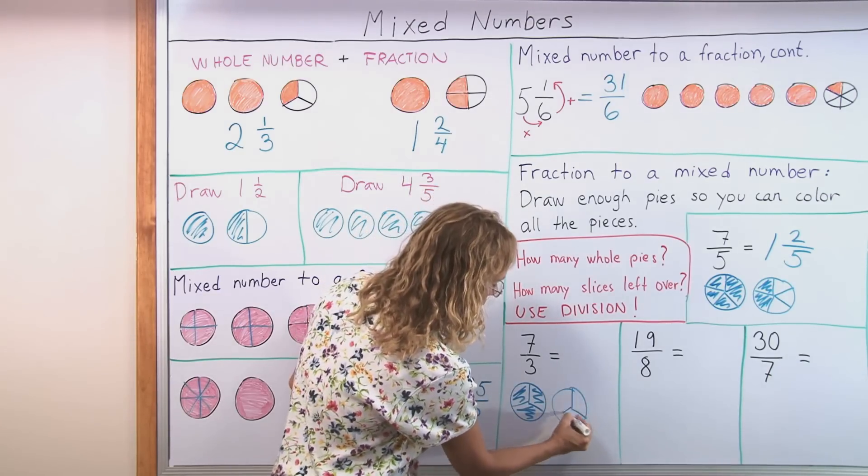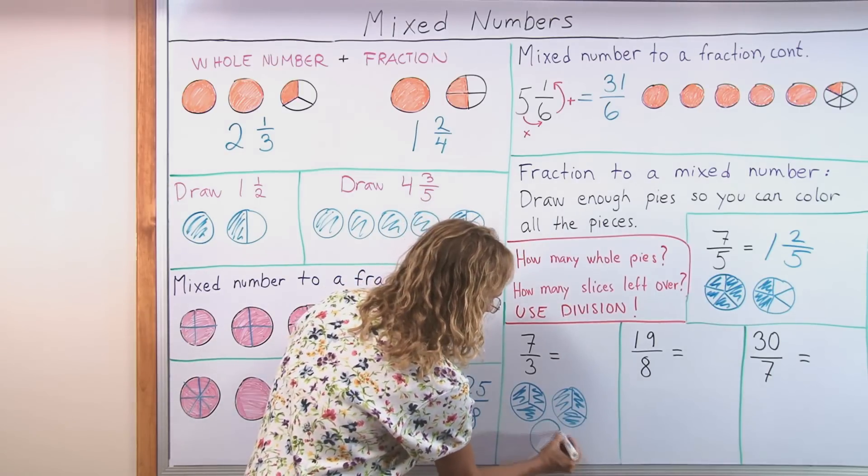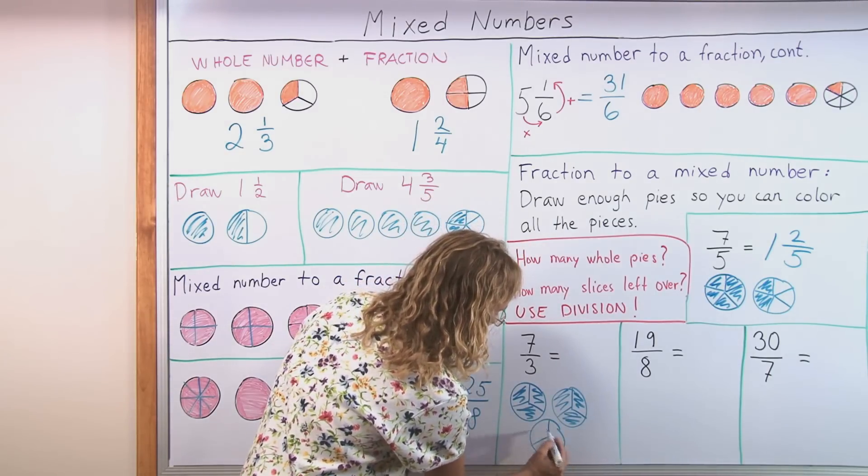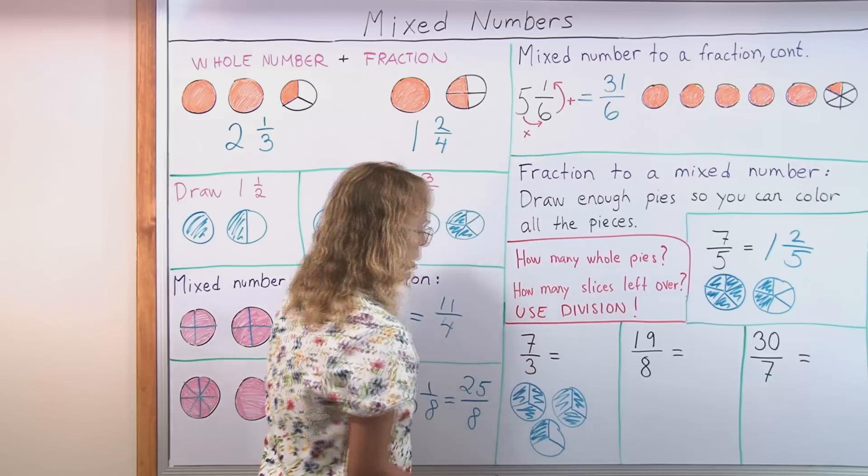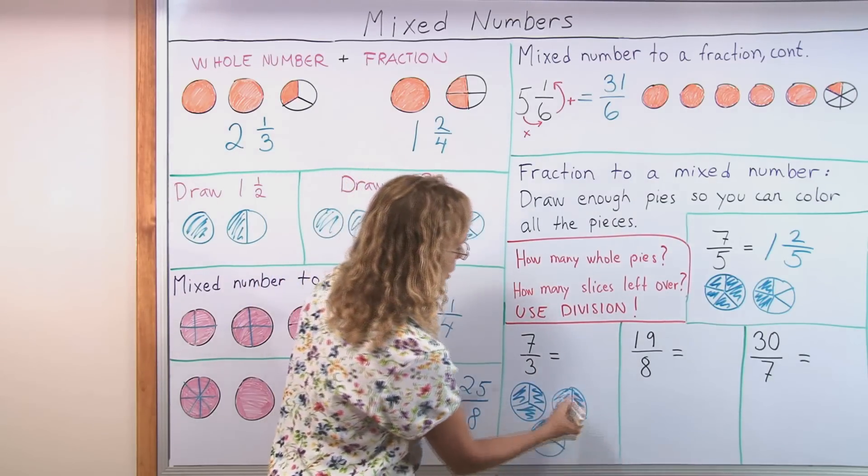Here is another one. I can color three more. That's six thirds. Not enough. One more. And this one here. Now I have colored seven thirds. And so I can see it is two and one third.